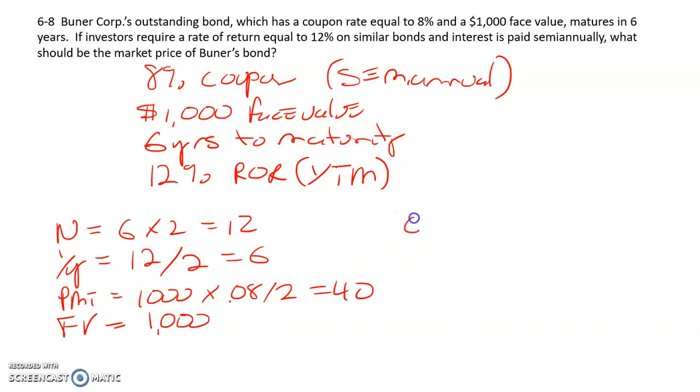And then we compute PV, and that will give us what the market price of the bond should be, which is $832.32.